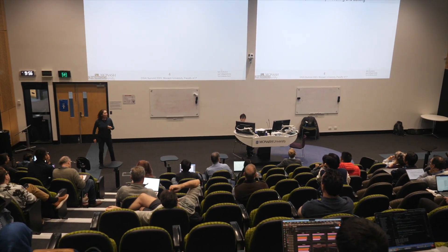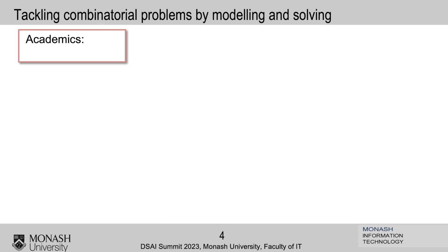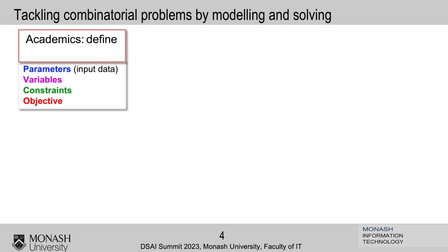How do we do this? It's mostly academics — and also several engineers. When we academics think about this, we think about how to define parameters, variables, constraints, and objectives. And in a group we usually find a modeling language with which to build a model.